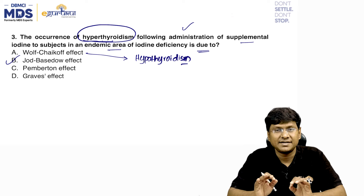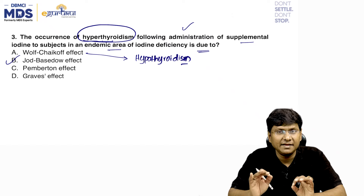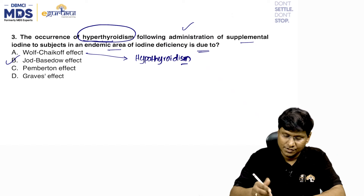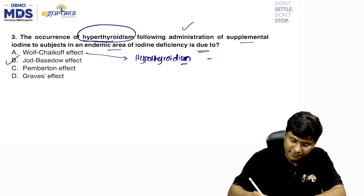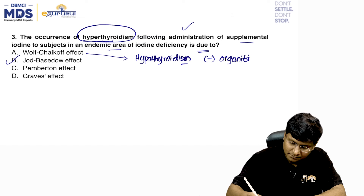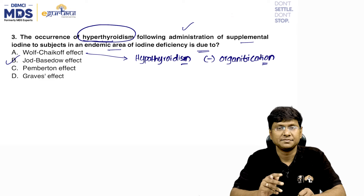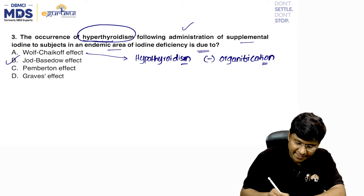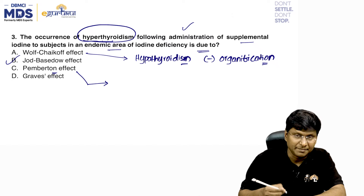The Wolff-Chaikoff effect is iodine-induced hypothyroidism. The mechanism for hypothyroidism in Wolff-Chaikoff effect is transient inhibition of organification, which results in hypothyroidism.